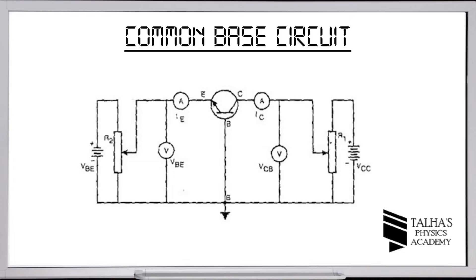This is the circuit designed to study the common base configuration. An ammeter is connected in series with the emitter to measure the emitter current IE. Another ammeter is connected in series with the collector to measure the collector current IC. Two voltmeters are connected in parallel: one across the emitter-base junction and one across the collector-base junction.